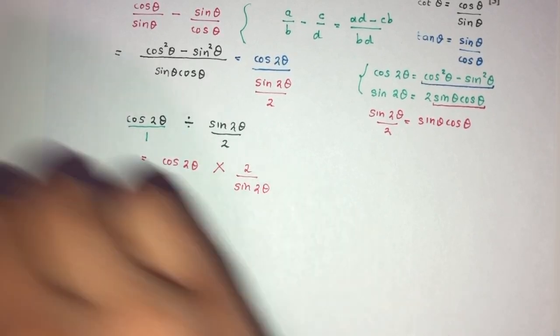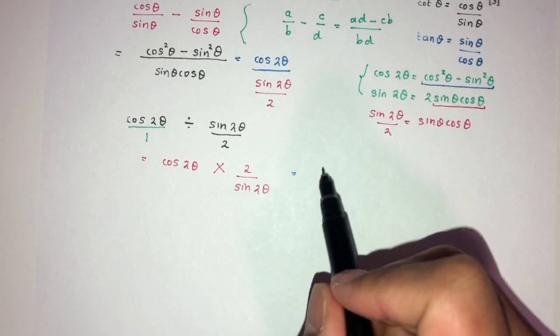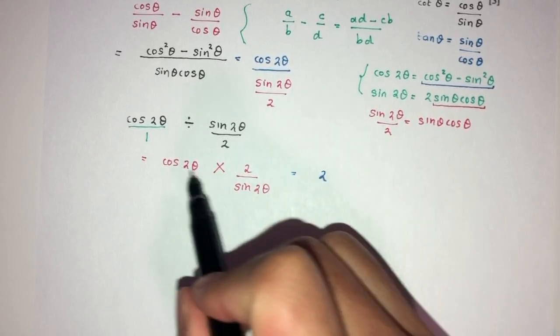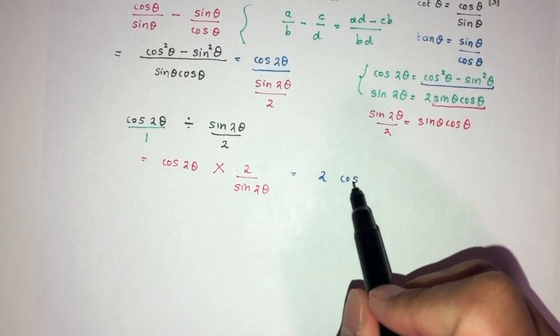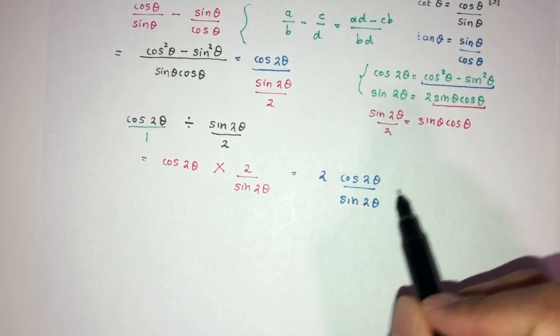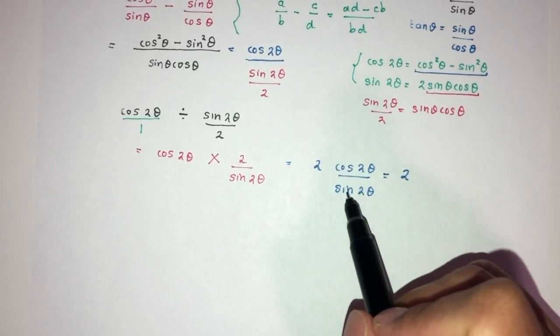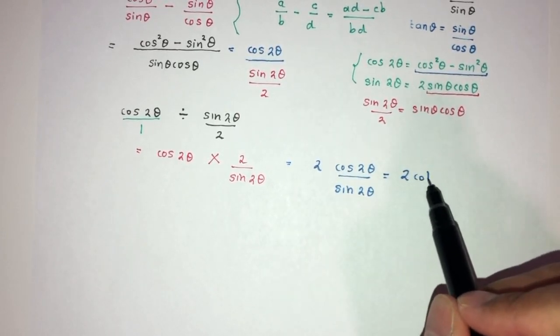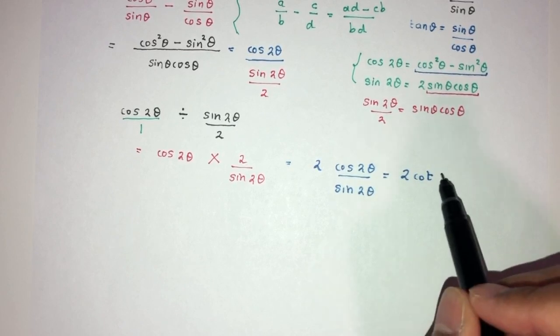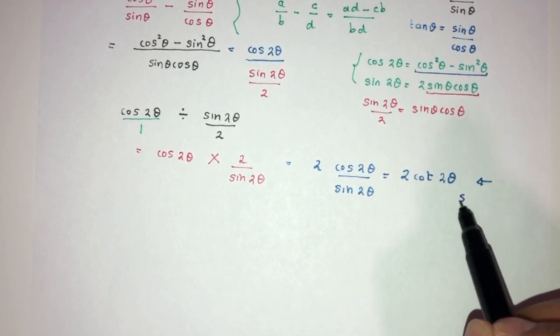Now, we can simplify step by step. So, finally, 2 will be 2. Leave this outside. And here we have cos 2θ divide by sin 2θ. So, 2 is 2. Now, what is cos divide by sin? It will be cot. And here we have angle is 2θ. And this is shown as required.